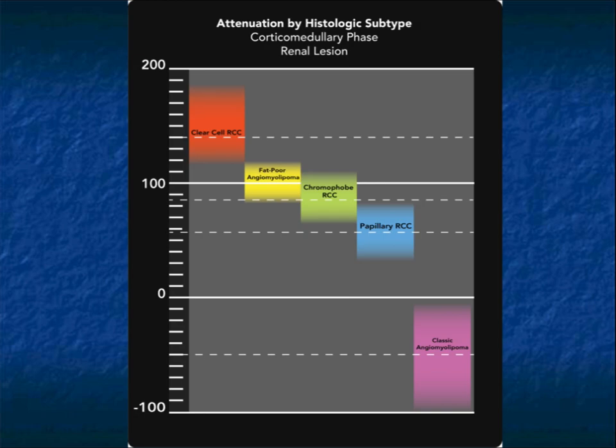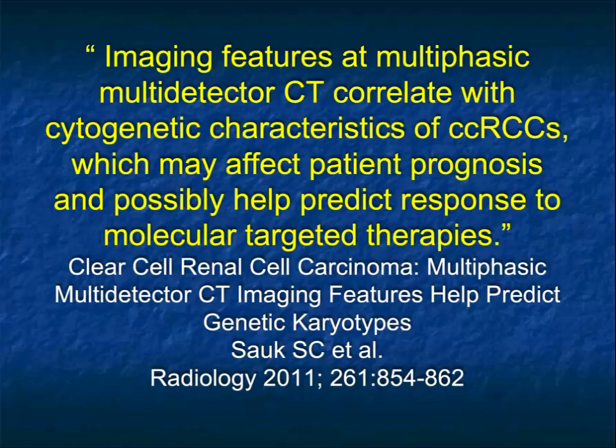Fat can theoretically be seen in renal cell carcinomas, but invariably that's a case with an aggressive tumor invading the perirenal fat — you won't confuse that with a fat-poor angiomyolipoma. Classic angiomyolipomas are in the minus 50 to minus 90 Hounsfield unit range typically.